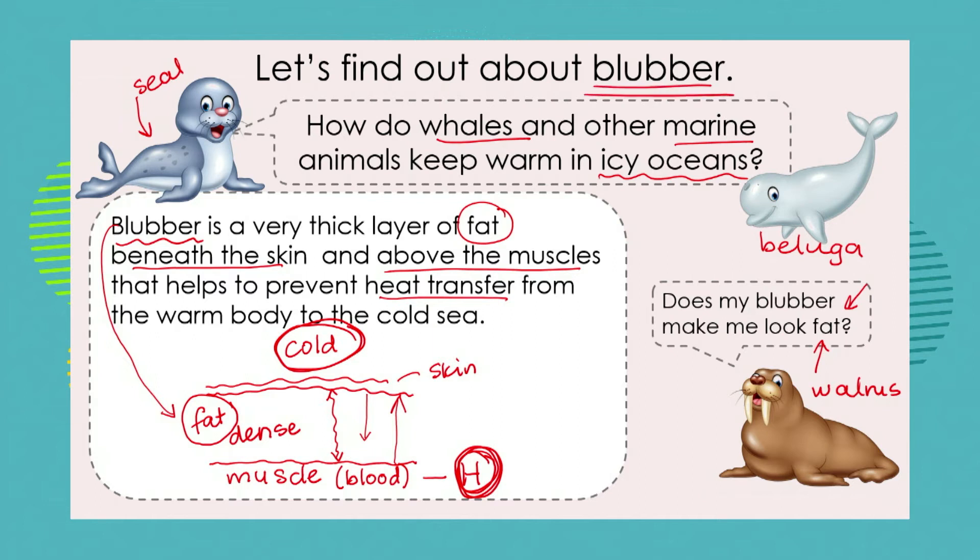Blubber is an extremely important adaptation. You can explore this yourself by making a blubber glove: put a glove on your hand, smear a lot of margarine or butter on it, and place a block of ice on the margarine-covered hand and on a plain hand. Can you feel the ice more with or without the insulating layer? That's only a thin layer of margarine — imagine what a very thick layer of blubber would do.